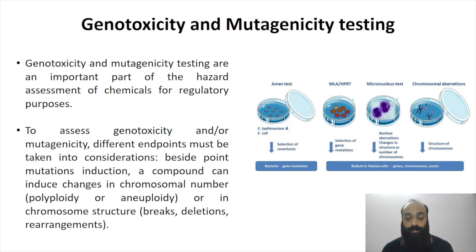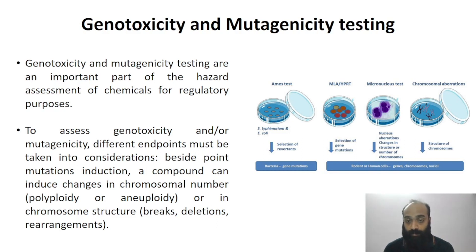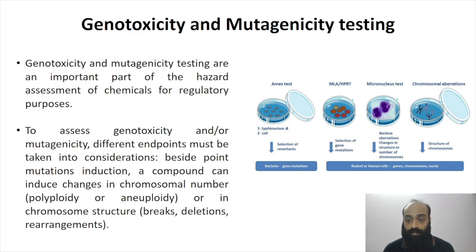These tests are referred to as genotoxicity tests or mutagenicity tests. There are a number of tests employed which use either bacterial systems or mammalian systems. We can determine whether the results are showing some type of toxicity by looking at certain characteristics of that particular test. In this video I will be talking about the bacterial tests, particularly the Ames test.